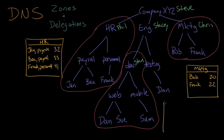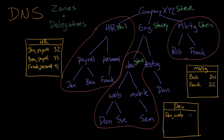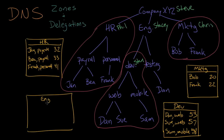Stan does a similar thing and makes his development phone list. Dan, who works in web, is at extension 53. Sue, who also works in web development, is at extension 57. Sam in the mobile area is at extension 58. Stacy creates the engineering phone list. She's got Dan working directly for her in the testing department — a really small department — so Stacy says she'll just be the manager for Dan, who's in testing at extension 18.